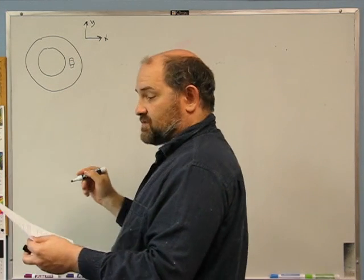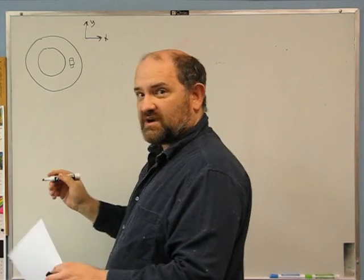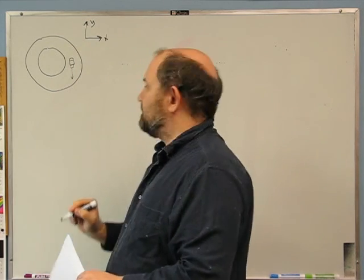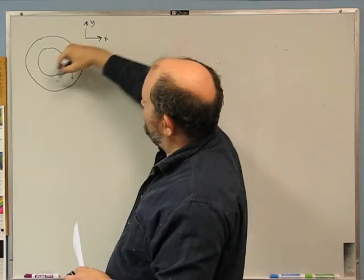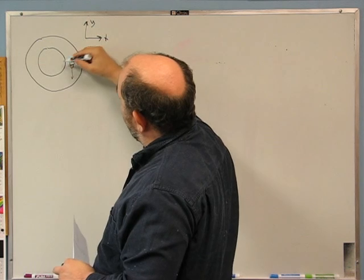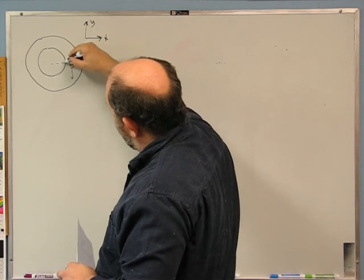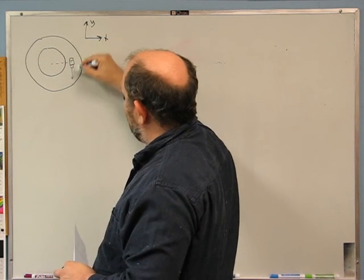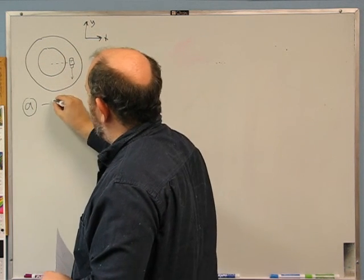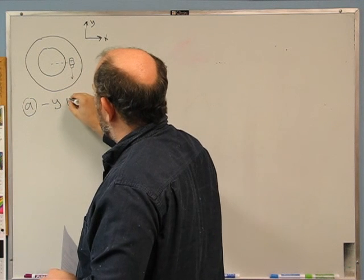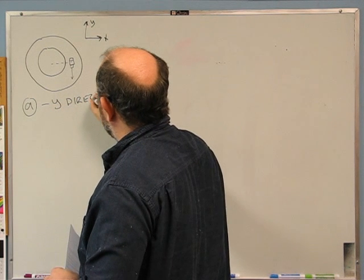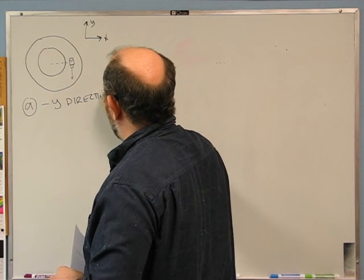The first question is: what is the direction of the velocity of the car? It's going that way — that's what moving clockwise means. If the car is on the plus x side, then the answer to part a is the minus y direction. That wasn't too bad.